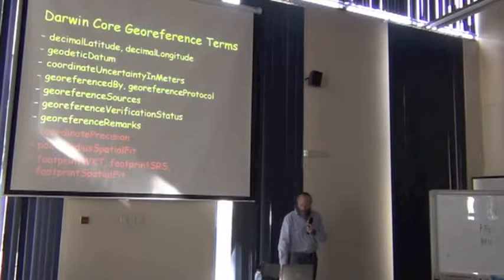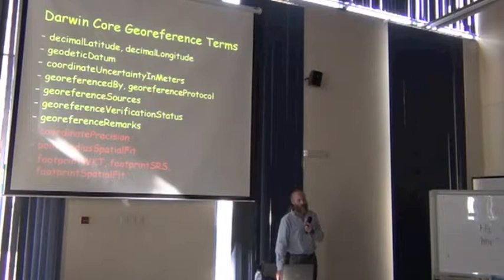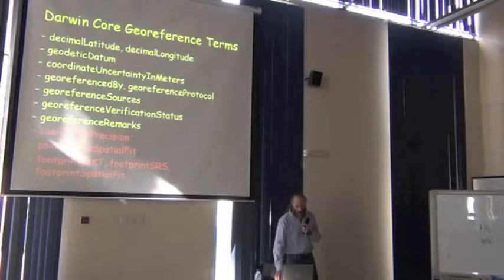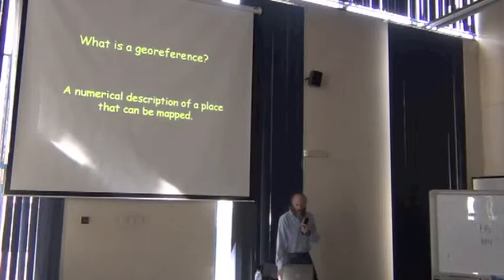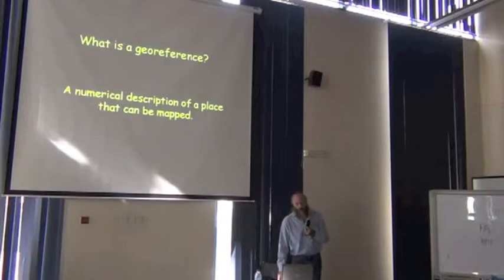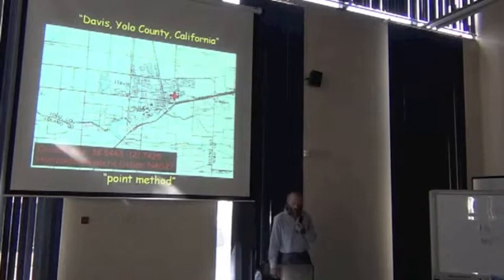Finally, we add whatever remarks are needed to describe what we did that might have been out of the ordinary, or assumptions that we made. So all these are fields in Darwin Core. But I still need to tell you what a georeference is. I said that it's a numerical description of a place that can be mapped, and you might guess from what I just showed you that it has something to do with decimal latitude and longitude.